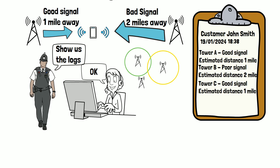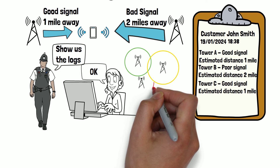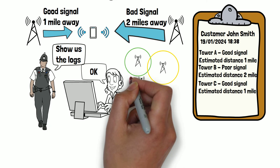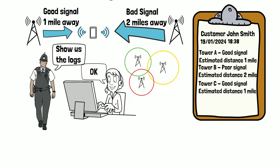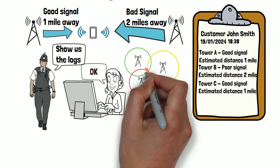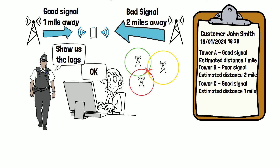If the phone was also one mile from tower C at the same time, we can see there's only one location where all three circles overlap each other. This points to the location the phone was or is at this particular time.